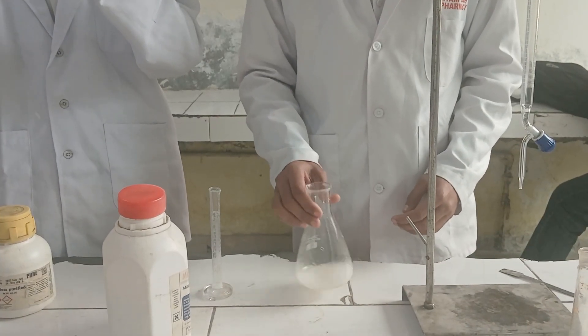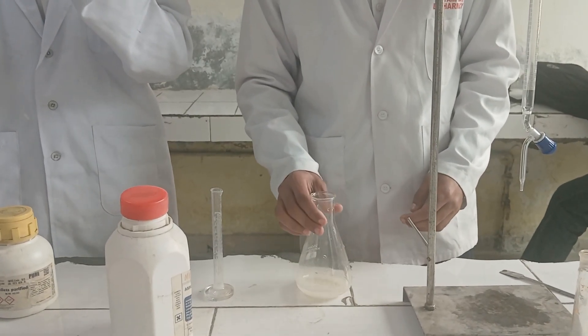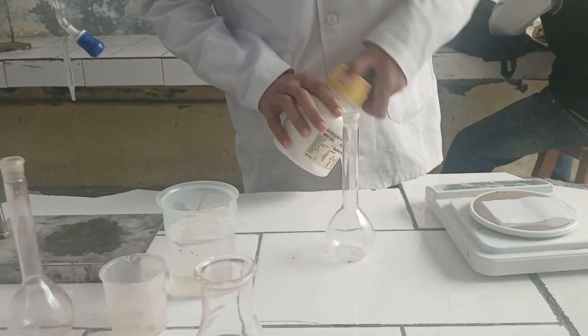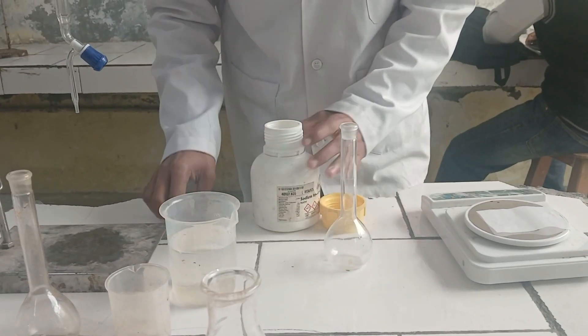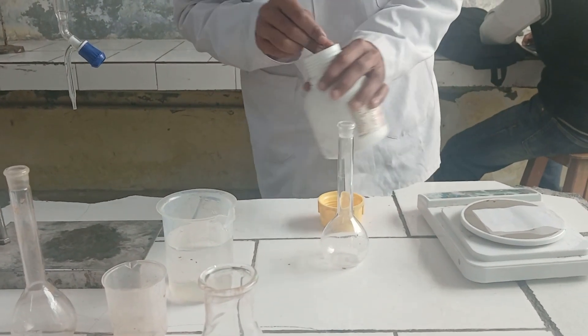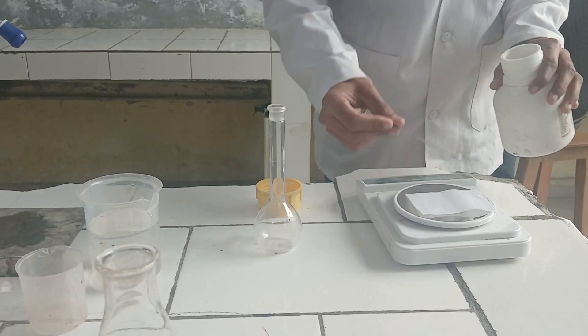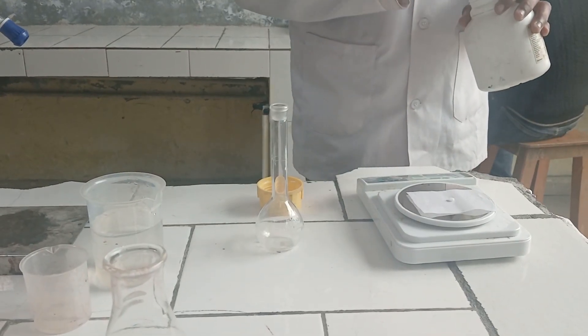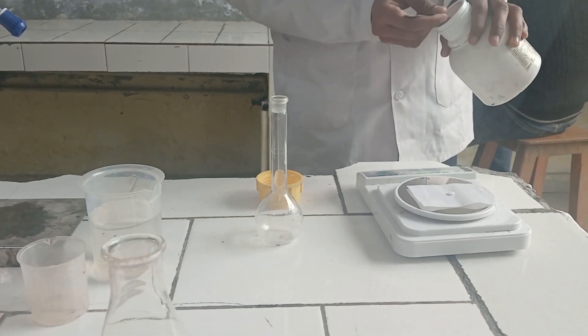In next step, we are making sodium hydroxide 0.1 molar solution for titration. We are weighing 0.4 gram of sodium hydroxide and make up the volume up to 100 ml.